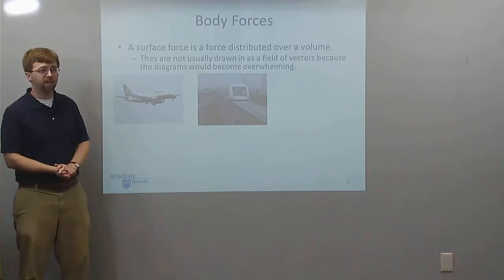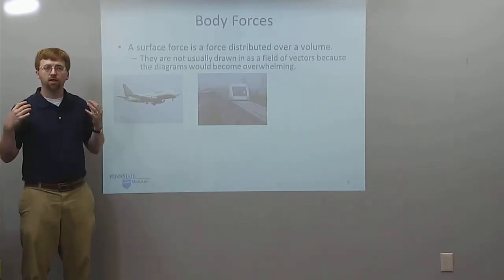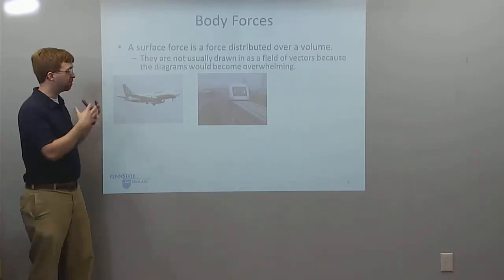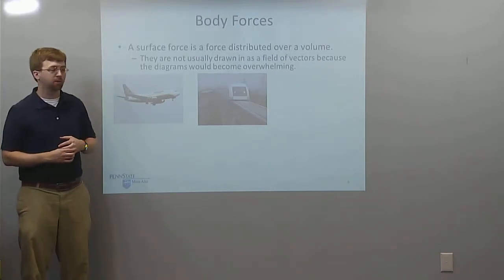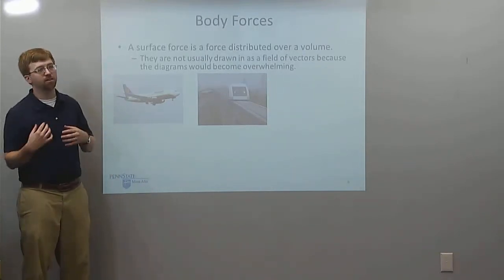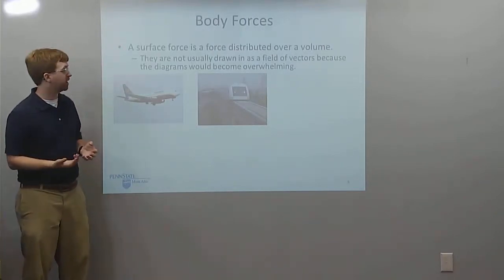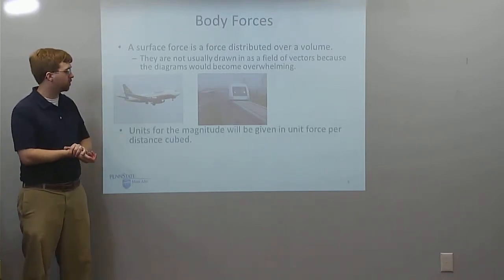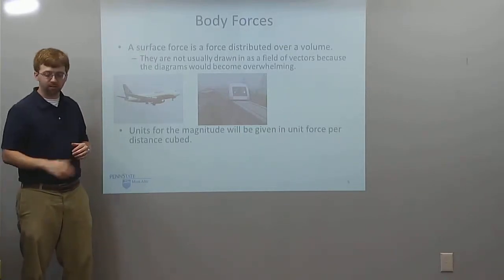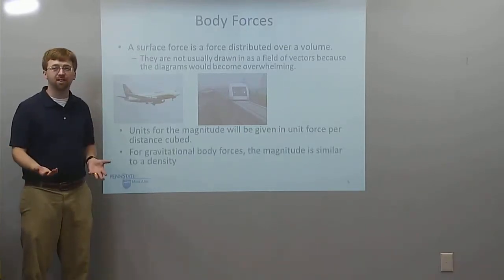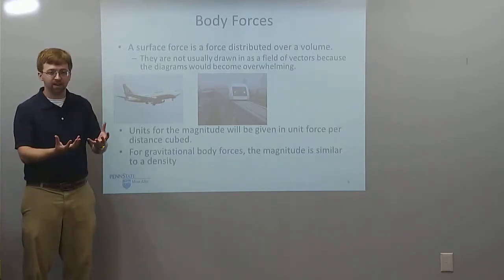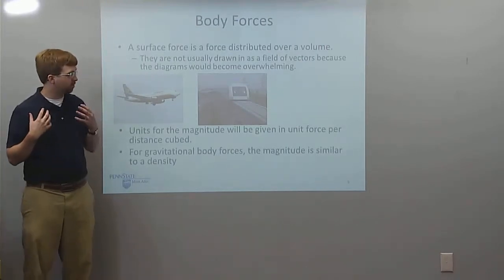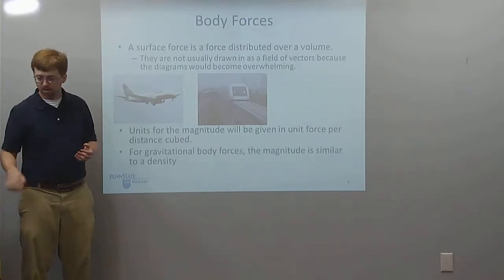Body forces are usually not drawn on diagrams, because drawing a force vector on every little bit of the body would create a big blob of vectors covering the entire diagram. Instead, we just describe the body force as so many pounds per cubic inch of material and don't draw it into our diagrams. The units are given in force per distance cubed, similar to what we think of as density — for example, 60 pounds per cubic foot of material.